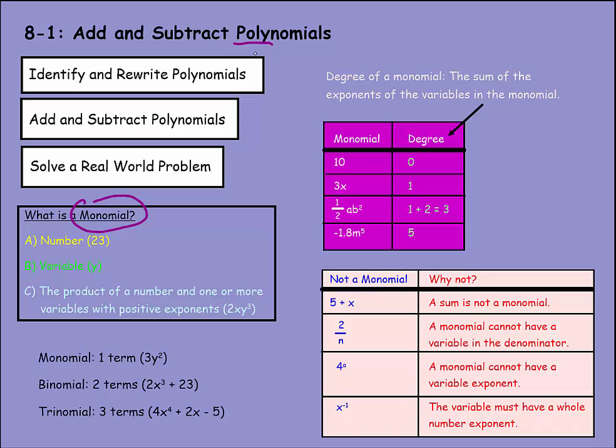Here's where the word poly comes into play, because sometimes there's more than just monomials. There could be binomials, which have two terms, such as 2x³ + 23, separated by that adding sign. There's also trinomials, which have three terms, so 4x⁴ + 2x - 5. I see three different monomials here, making it a trinomial. Tri means three.